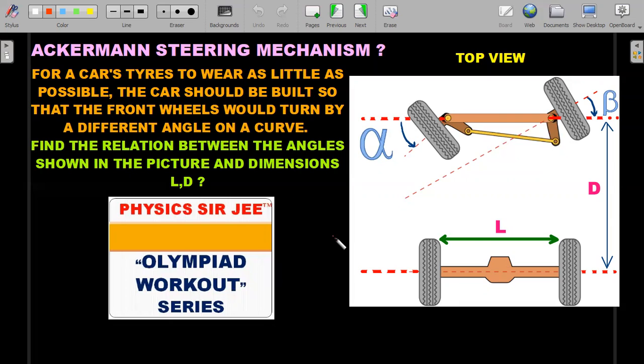Here we go: for a car's tires to wear as little as possible, the car should be built so that the front wheels would turn by a different angle on a curve as compared to each other. The left wheel is making an angle alpha with the horizontal line joining the two tire centers, and the right wheel is making an angle beta. Find the relation between these angles alpha and beta in the picture and the dimensions L and D.